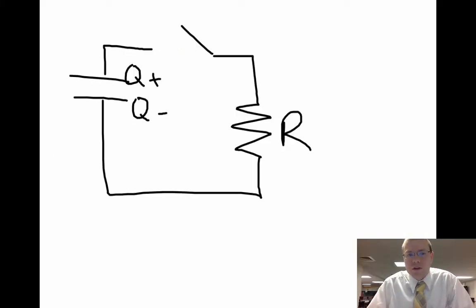So we're going to start with the discharge. We're going to have a charged capacitor, one plane being positive, one plane being negatively charged, and we're going to have a switch open with our resistor.